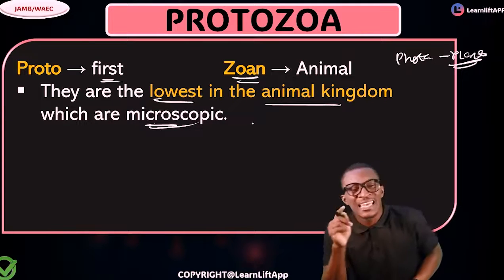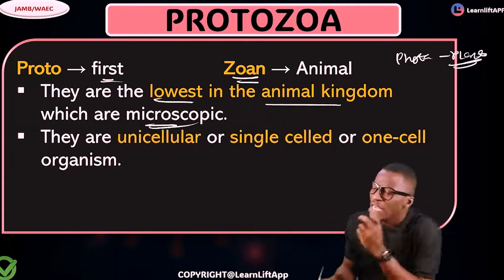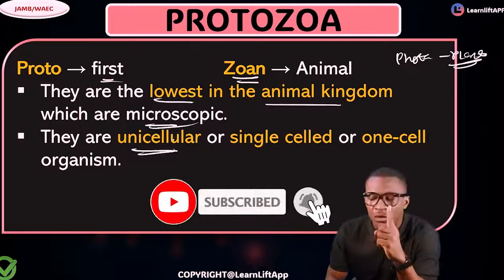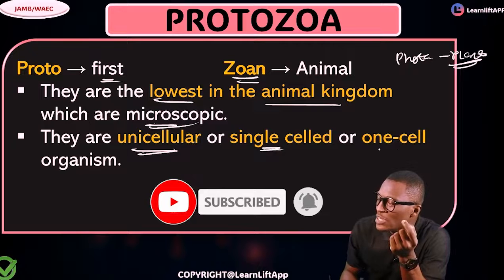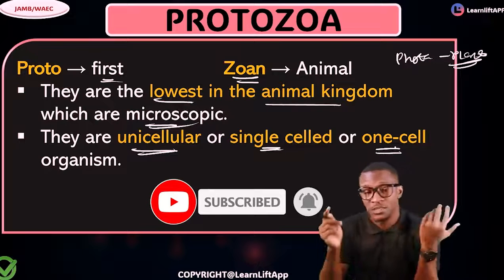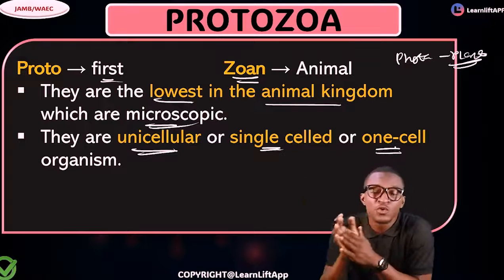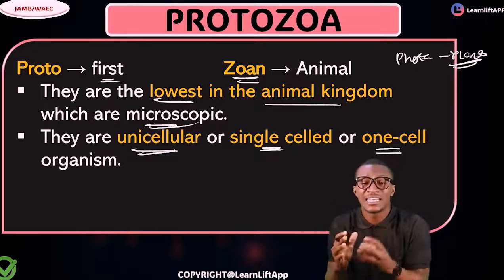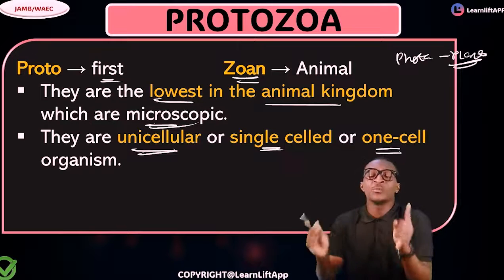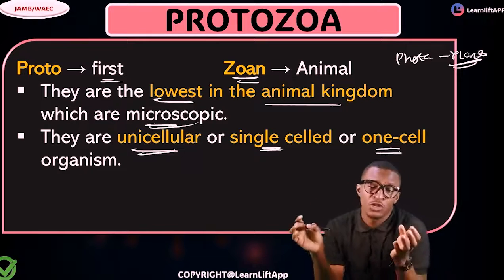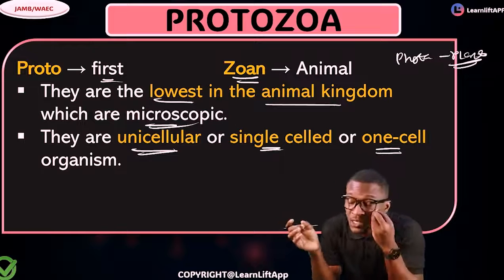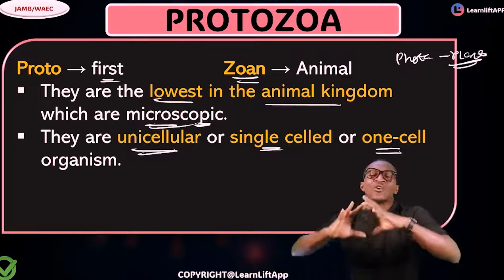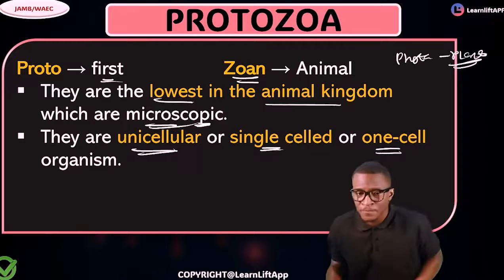Protozoa are the lowest in the animal kingdom, they are microscopic, and they are unicellular — that means they have one cell, or we can say they are single-cell organisms. Every member of the protozoa is unicellular: they carry out their life processes as a single cell. The cell is the basic unit of life, and that's why we say these guys are microscopic.